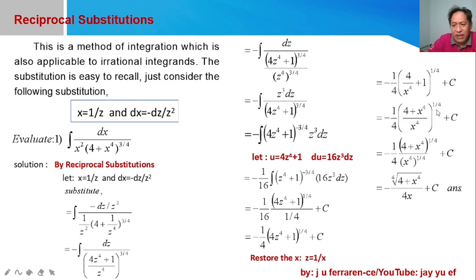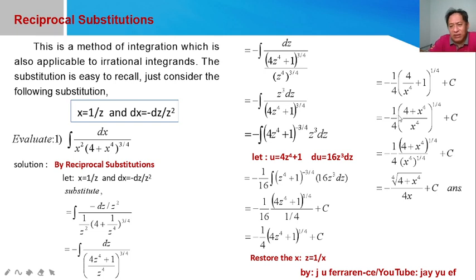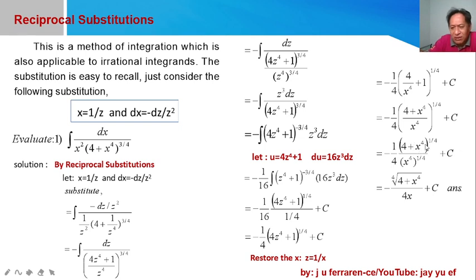Since we have a fraction inside, we combine as one fraction using x⁴ as the LCD, giving us (4 + x⁴)/x⁴ raised to the one-fourth power. Taking the fourth root of the numerator and denominator separately, the denominator simplifies to x. Multiplying by x in the denominator, our final answer is: negative fourth root of (4 + x⁴) over 4x, plus C.